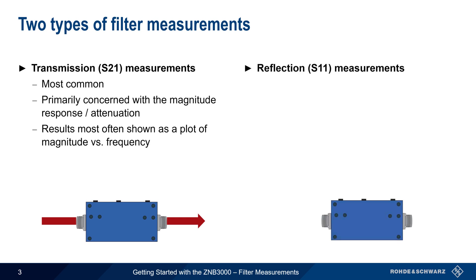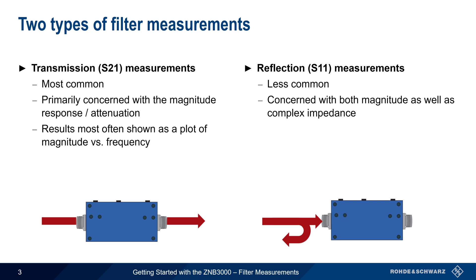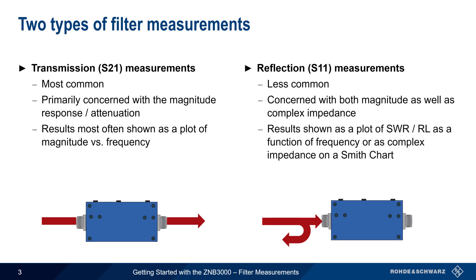The other type of filter measurement is reflection, or S11 measurements, where we measure how much power the filter reflects back to the source. Recall that most filters attenuate signals by reflecting them rather than by absorbing them. Filter reflection measurements are, however, much less common than transmission measurements. Because reflections are the result of an intentional impedance mismatch, reflection measurements are often concerned with both magnitude and complex impedance, and thus results are often shown as standing wave ratio or return loss, or as traces on a Smith chart.